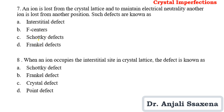Question 7: An ion is lost from the crystal lattice, and to maintain electrical neutrality, another ion is lost from another position. Such a defect is known as — when a cation and anion pair creates vacancies by leaving the lattice, that is known as Schottky defect. So the answer is Schottky defect.